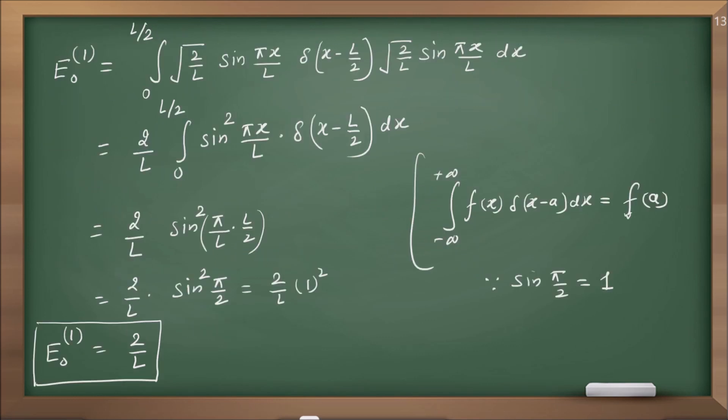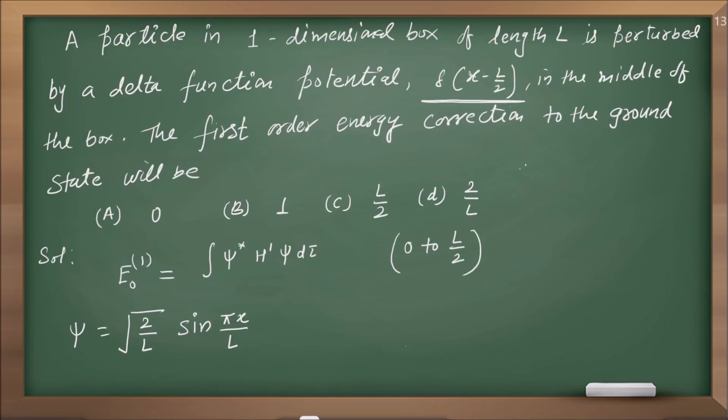So option D is correct. The first-order energy correction to the ground state with delta function potential δ(x − L/2) is 2/L. यह previous year question था from CSIR NET that we have done today.